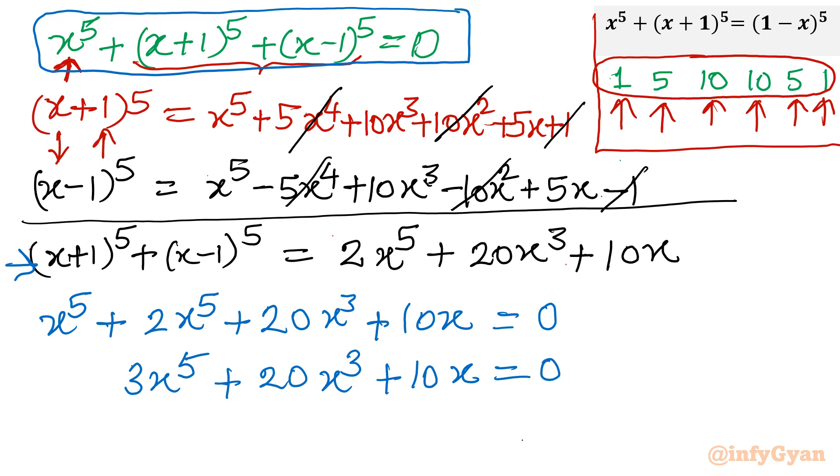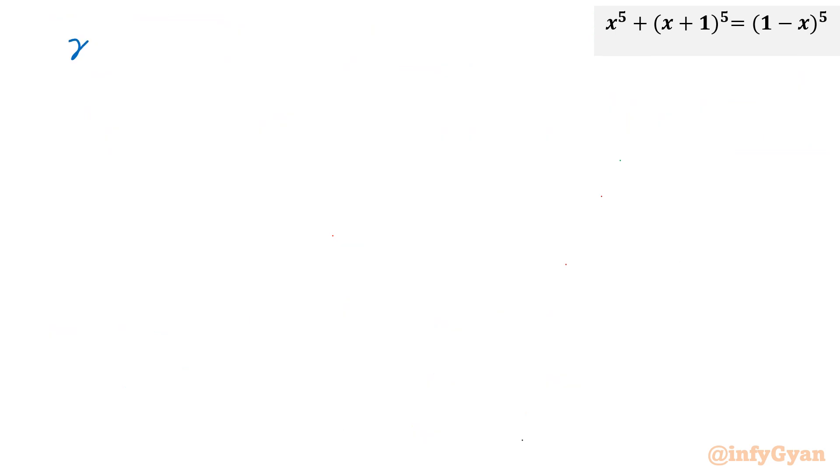So x is common. Let us consider x common. 3x power 4 plus 20x square plus 10 equal to 0. f times g equal to 0, that means f equal to 0 or second bracket equal to 0. So let us solve. Either x is equal to 0, so this is our first real solution. And second quartic would be 0, that is 3x power 4 plus 20x square plus 10 equal to 0. This is one quartic equation or this is quadratic in x square also.